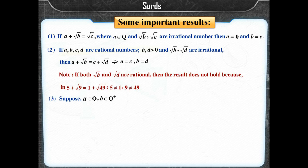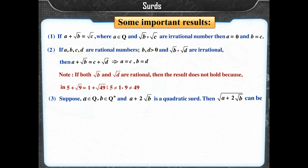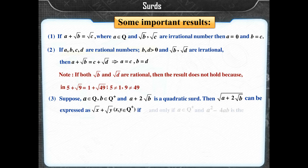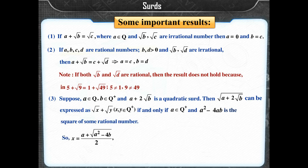Result 3: Suppose A belongs to Q, B belongs to Q positive, and A + 2√B is a quadratic SIRD. Then √(A + 2√B) can be expressed as √X + √Y, where X and Y belong to Q positive, if and only if A belongs to Q positive and A² − 4B is the square of some rational number. So X = (A + √(A² − 4B)) / 2 and Y = (A − √(A² − 4B)) / 2. Therefore, X + Y = A and XY = B.